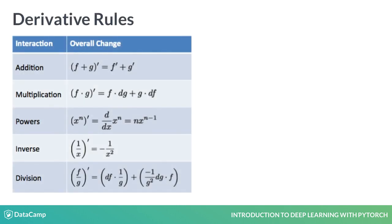Some important rules of derivatives are the addition and multiplication rule. The addition or sum rule says that for two functions f and g, the derivative of their sum is the sum of their individual derivatives. On the other hand, the multiplication rule says that the derivative of their product is f times the derivative of g, plus g times the derivative of f.